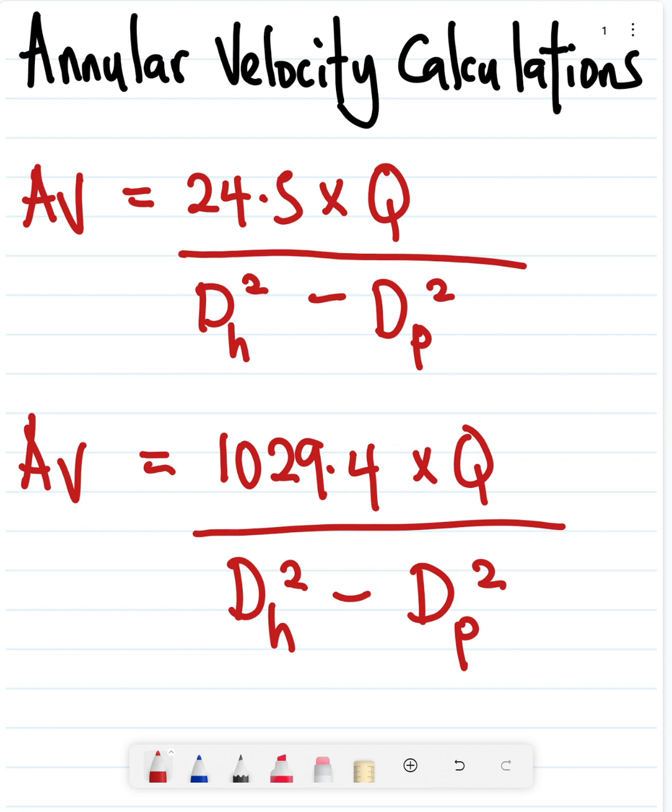We always want the fluid in annulus to be either turbulent or in plug flow. We never want it to be laminar because at that point your cuttings might begin to drop out of the mud.